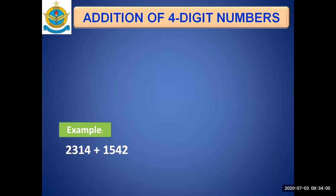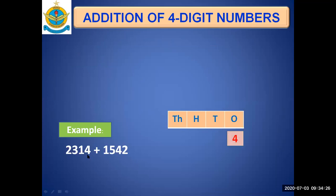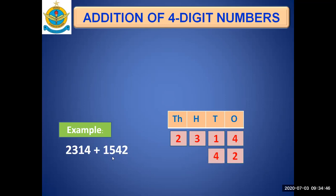For example, we have two numbers: 2314 and 1542. First, we write the place values at the top, then write the numbers starting from the ones of the first number. 2314: four goes in ones, one in tens, three in hundreds, two in thousands. The second number is written below — two in ones, four in tens, five in hundreds, one in thousands.